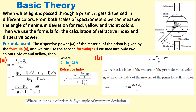Delta is related to mu as delta equals (mu minus 1) times A, where A is the angle of the prism and delta M is the angle of minimum deviation. First we find mu for different colors using sin((A + delta M)/2) divided by sin(A/2), then find delta, and then omega equals (mu V minus mu R) divided by (mu Y minus 1).